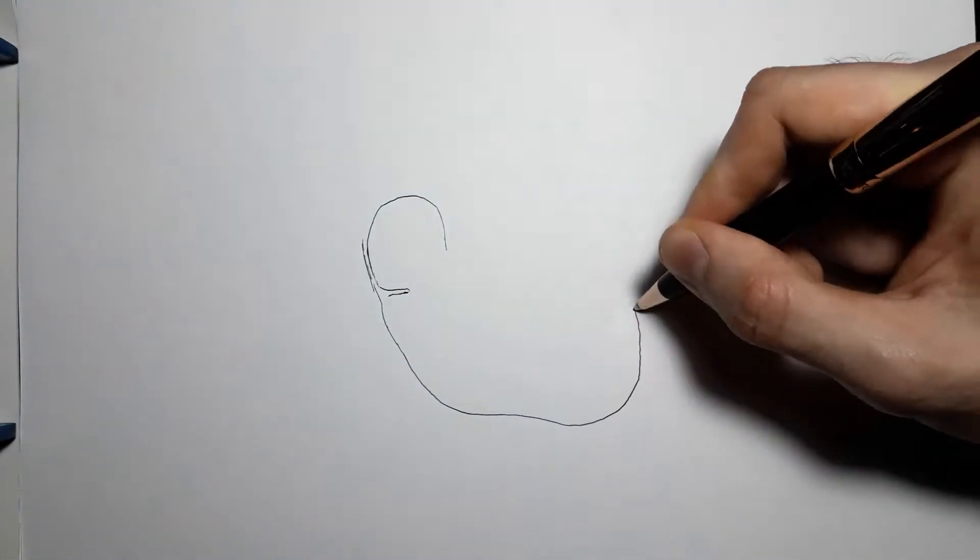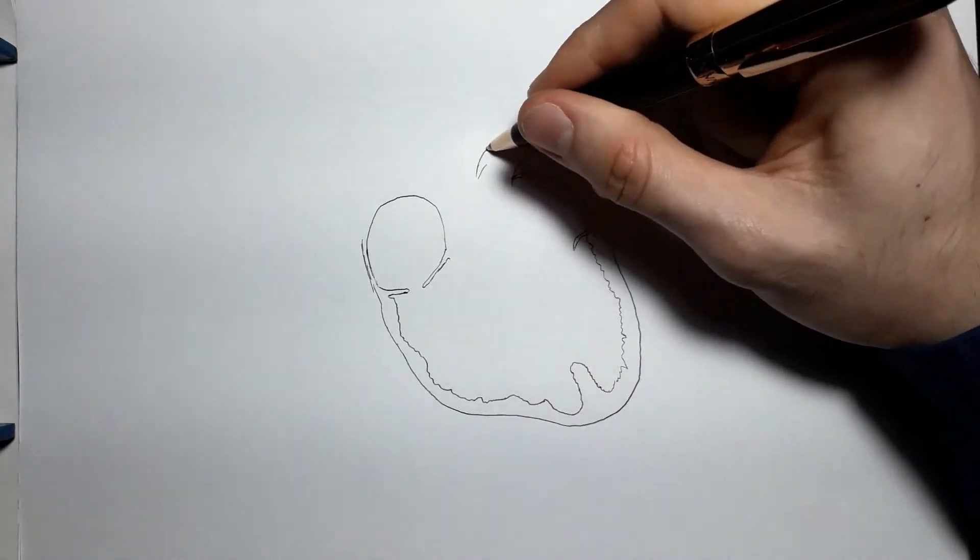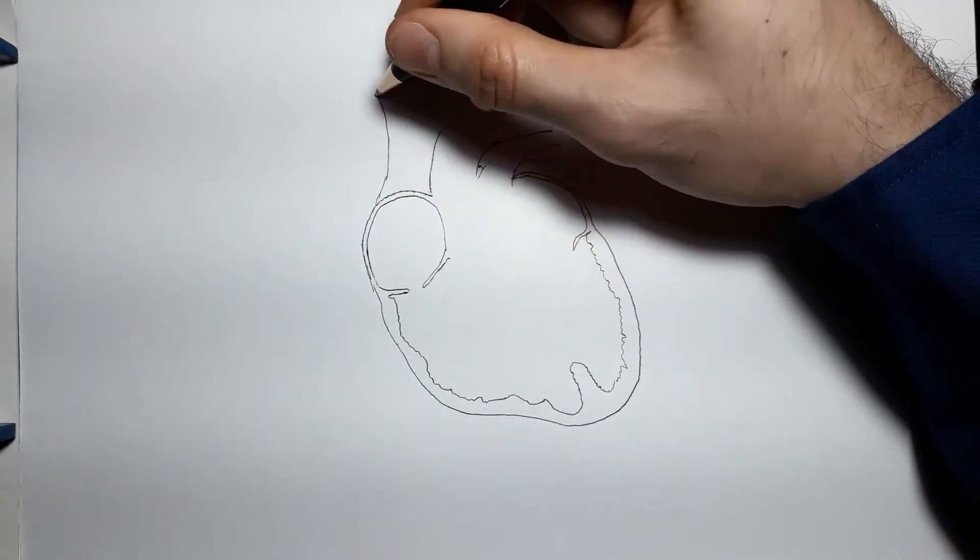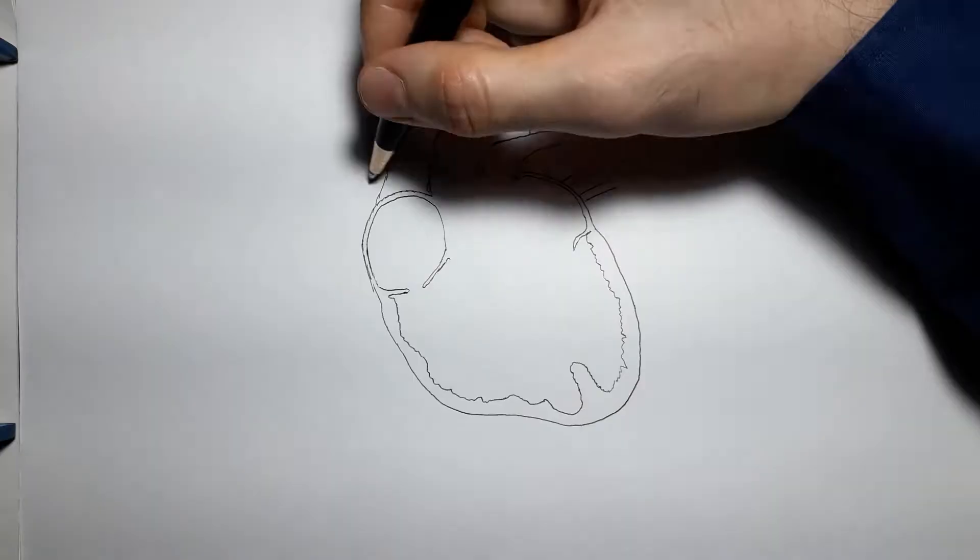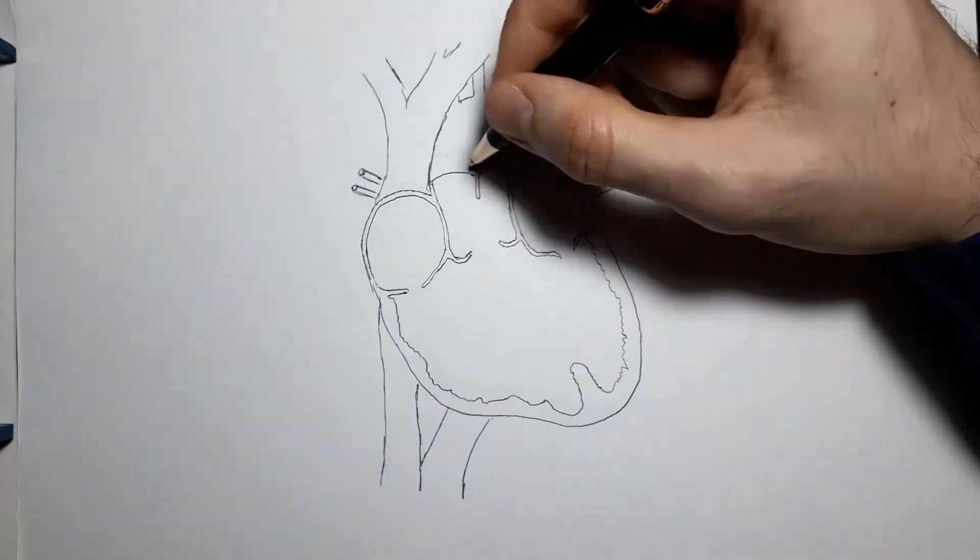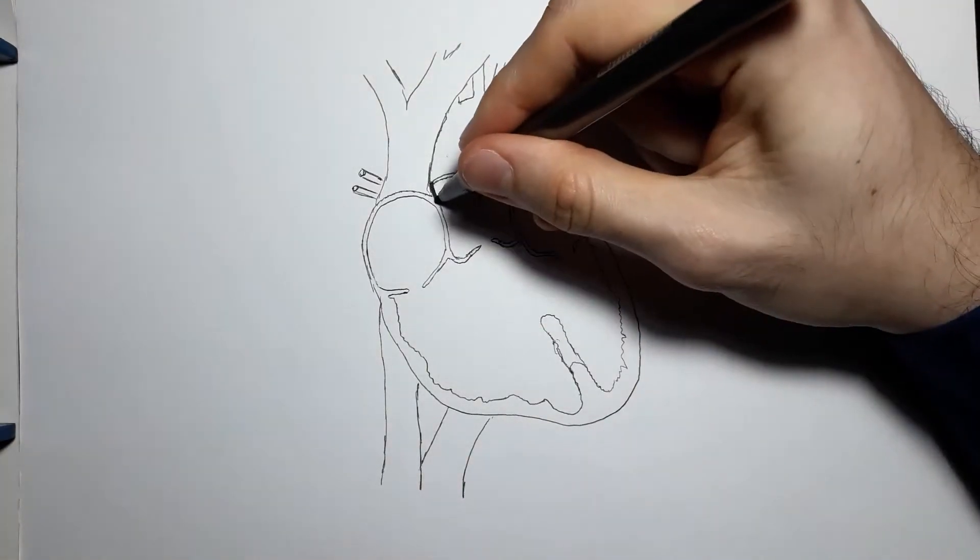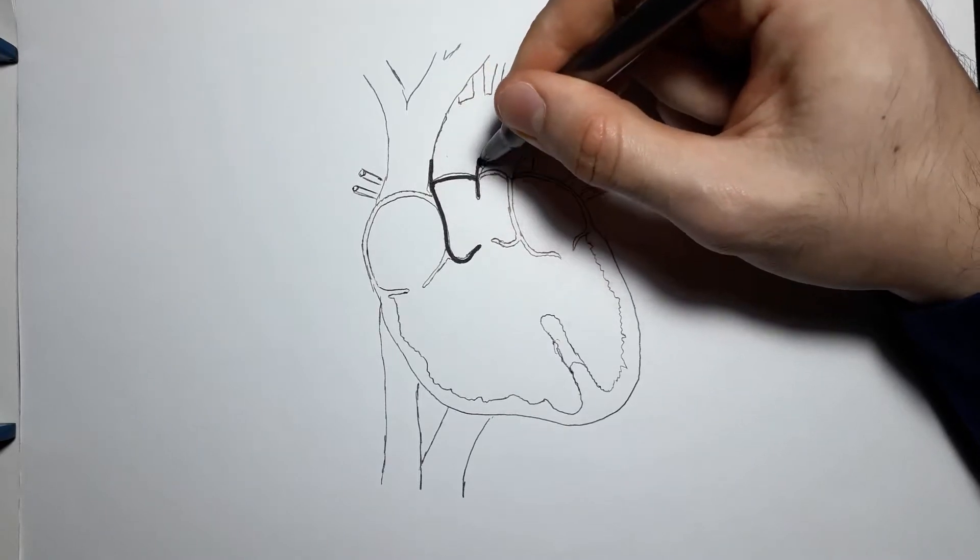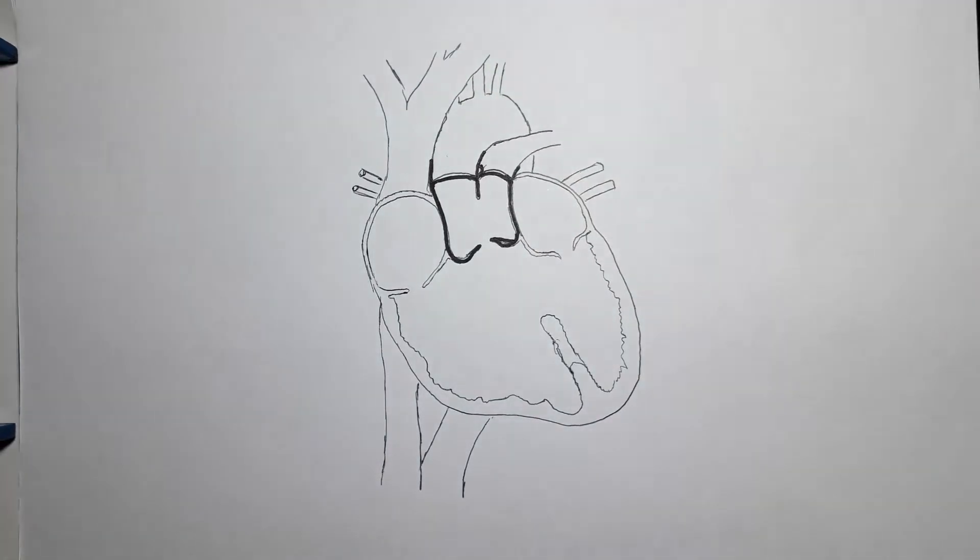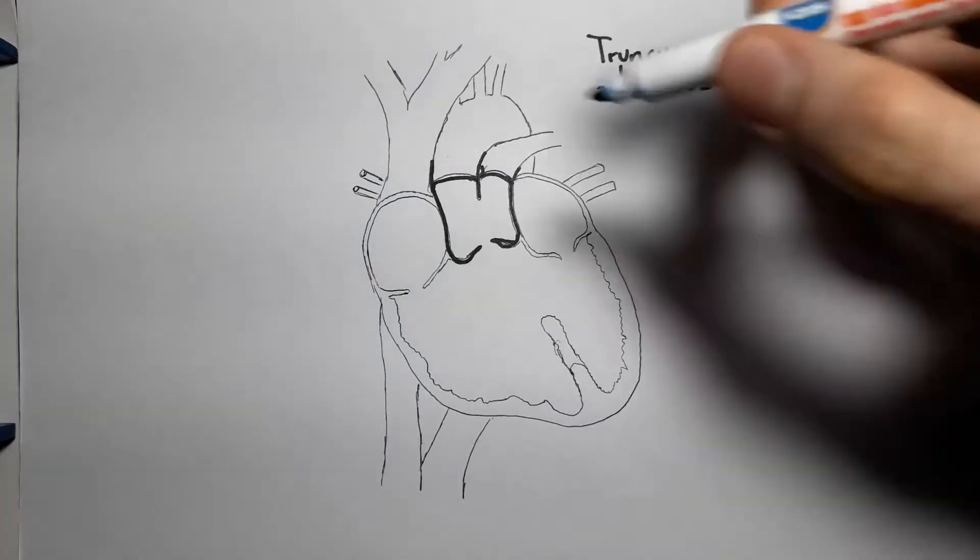Persistent truncus arteriosus is when the aforementioned structure fails to divide into the pulmonary trunk and the aorta, due to a lack or incomplete formation of the aortic pulmonary septum. As a consequence, just as in the primitive heart, we get a single large vessel arising from both ventricles that only downwards separates into the aorta and the pulmonary arteries.